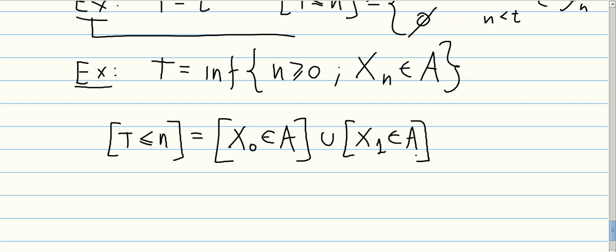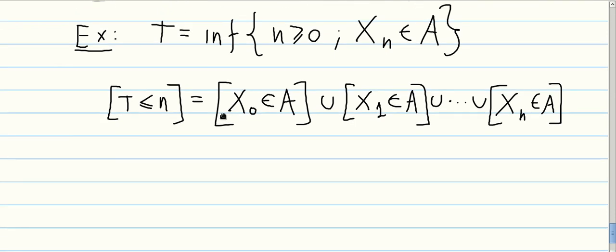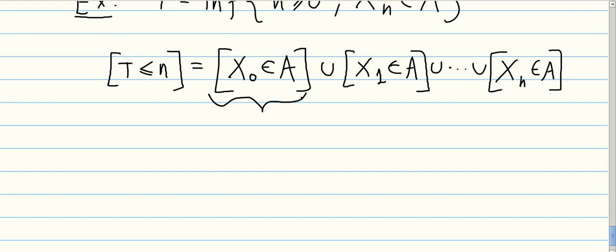Or, X1 belongs to A. If X1 is in A, then T is either 0 or 1. And you can keep going until Xn belongs to A. If Xn belongs to A, either it's the first time that it's in A, so T is exactly equal to N, or it's not the first time, Xj was already in A before. That means T is going to be smaller or equal to N. But in any case, this is an event, an intersection, a union of events all in Fn.